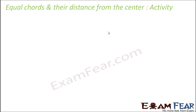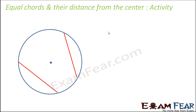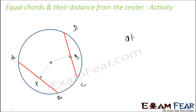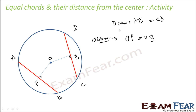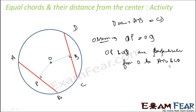Let's do one more activity where we draw a circle and two chords of equal length. These two chords are of equal length — let this be AB and CD. Now you can measure the distance from the center by drawing a perpendicular from the center. Let this be P and Q. You will observe that OP is equal to OQ, where OP and OQ are perpendiculars from O to AB and CD respectively, because we are talking about the shortest distance.